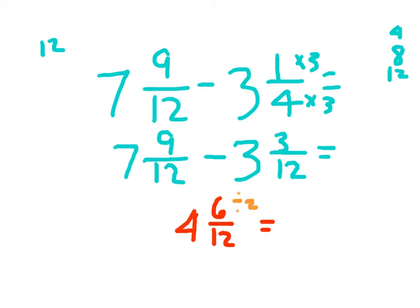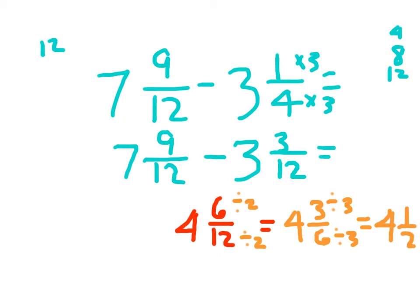If we divide by two — since both are even — we get four and three-sixths. At that point we can see it's still not in simplest form, and we write four and one-half as our answer. So seven and nine-twelfths minus three and one-fourth equals four and one-half. I've shown my work as to how I made equivalent fractions with that like denominator.